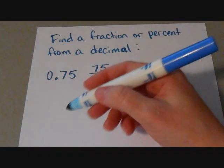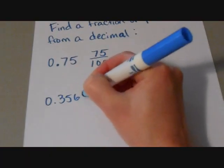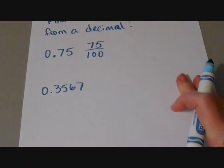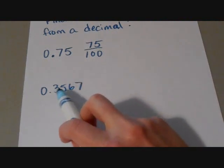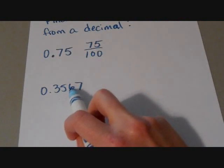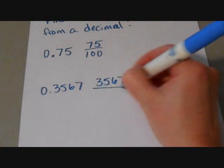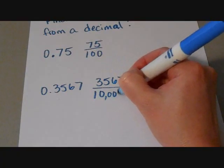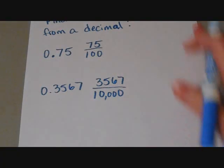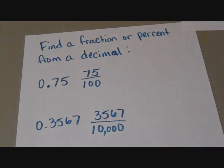Now of course if you have a larger decimal such as something like that, then you would just count how many place values you have. Tenths, hundredths, thousandths, ten thousandths. So it's that number out of ten thousand.